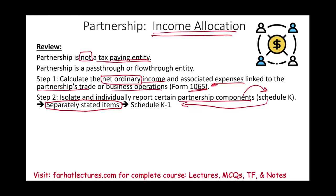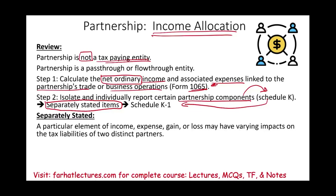What does it mean separately stated? It means this item — whether it's income, expense, gain, loss, or a certain credit — will have a varying impact on the tax liability of two distinct partners. So if we have two partners, the expense will affect each partner separately. Therefore, we report those expenses to the partners themselves and do not include them on Form 1065.